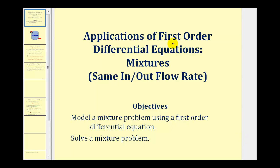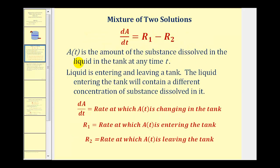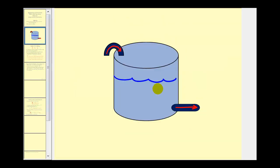Welcome to a lesson on mixtures involving first order differential equations. We'll look at an example where the inflow and outflow rates are the same. If we let A of T be the amount of the substance dissolved in a liquid in a tank at any time T, where liquid is entering and leaving the tank, the liquid entering will contain a different concentration of the substance. We have a tank that contains a certain concentration of a solution, a different concentration is entering the tank, which instantly mixes with the current solution, and then the new solution is pumped out.